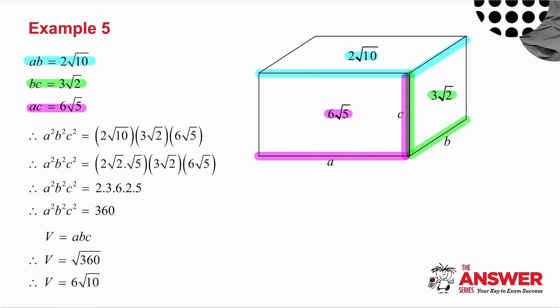Now the volume of a box is length times breadth times height. In other words, ABC. Well, if A squared, B squared, C squared is 360, then ABC must be the root of 360. And 360 I can write as 36 times 10. The square root of 36 is 6. And I'm left with root 10.